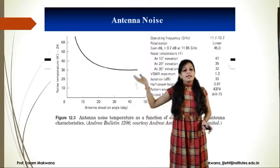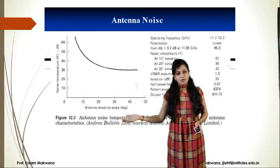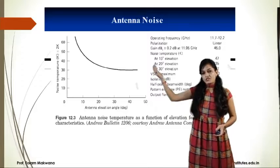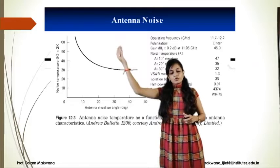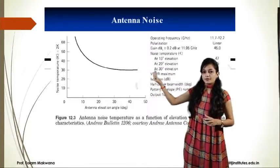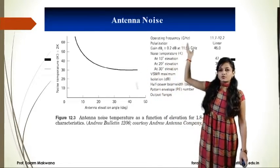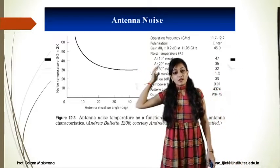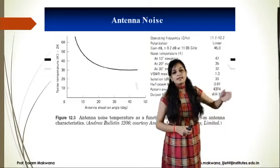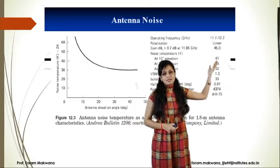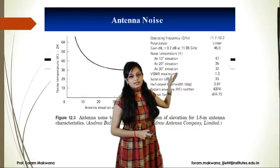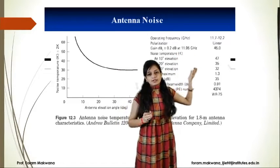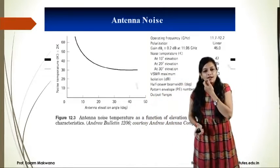Antenna noise temperature depends on its elevation angle. As the antenna elevation angle increases in degrees, noise temperature initially was maximum, but as angle increases, noise temperature decreases. For example, for 11.7 to 12.2 GHz frequency with linear polarization: at 10 degree elevation the noise temperature is 47 K, for 20 degrees it is 36 K, for 30 degrees it is 32 K. So as angle of elevation increases, the antenna noise temperature decreases because it is dependent on the angle of elevation.